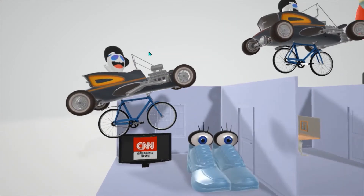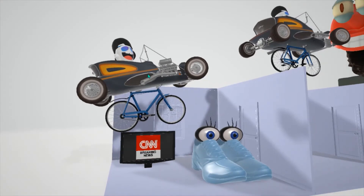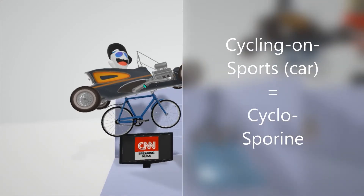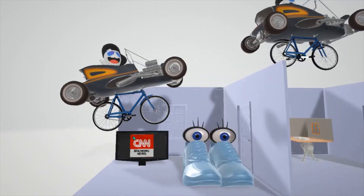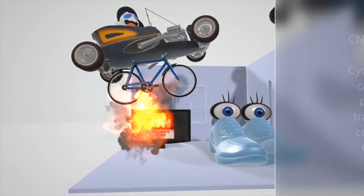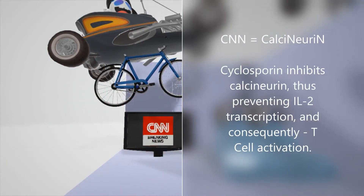Here we have cyclosporine, represented by this guy who cycles on his sports car — he cycles on his sports car for cyclosporine. Over here, he's going on top of the screen with CNN on it. So cyclosporine inhibits calcineurin — it inhibits CNN, calcineurin. Calcineurin is really important for IL-2 transcription, which of course is important for T cell activation. So cyclosporine, in effect, blocks T cell activation.